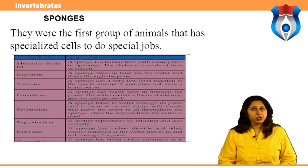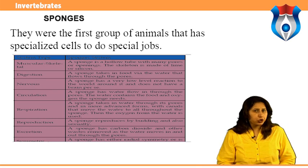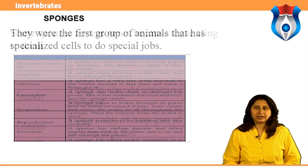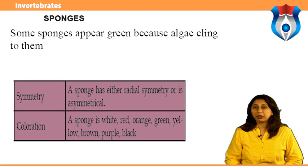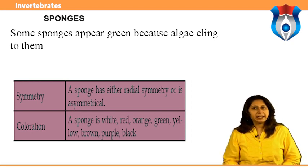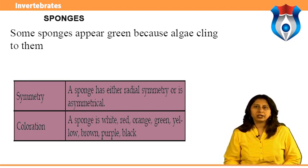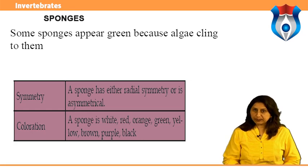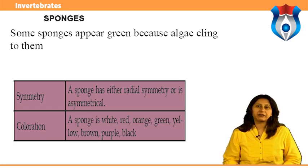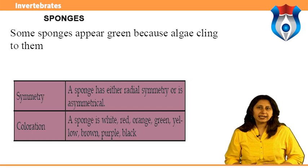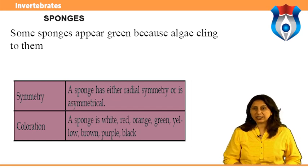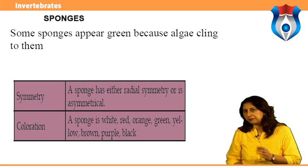Many sponges give off a toxic or poisonous substance. Some sponges appear green because algae cling to them. The algae provide oxygen for the sponge and the sponge provides carbon dioxide for the algae. When two living things live off one another, it is called symbiosis.